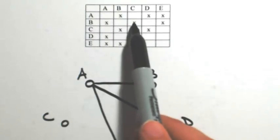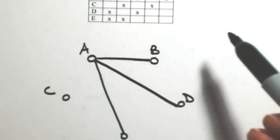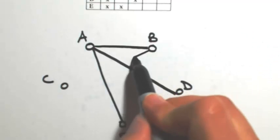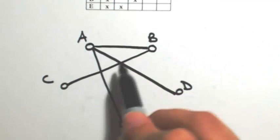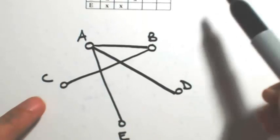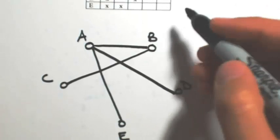Okay, B goes to A, C, and E. I already got the A connection. So C. Now just because I'm crossing over the edges doesn't mean I'm causing new vertices. I'm just crossing over. So C and B also goes to E.